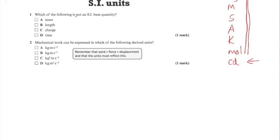Which of the following is not an SI base quantity? Mass is an SI base quantity, so that is the wrong answer. Length is an SI quantity, so that is wrong. Charge is not an SI base quantity — you can see that charge is not listed, so that is the right answer. Time is also a base unit, measured in seconds. So the correct answer is C.